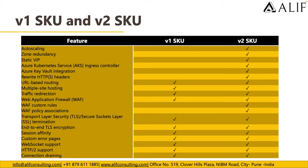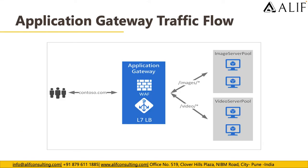WAF policy association is only available in V2. In terms of traffic routing, if a user is requesting a specific location like /image or /video, they will be routed to specific servers in the backend using URL-based routing.